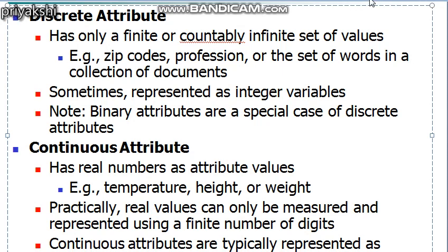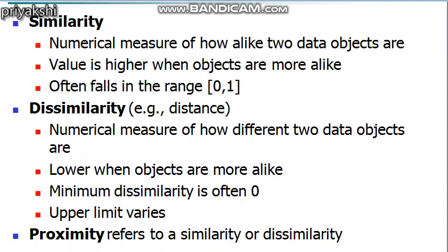Next, we will see some dissimilarity and similarity measures. A similarity measure between two objects can be defined as a numerical measure of the degree to which the two objects are alike. Similarities are higher for pairs of objects that are more alike. Similarity values are usually non-negative numbers, often falling between zero — meaning no similarity — and one — meaning complete similarity.